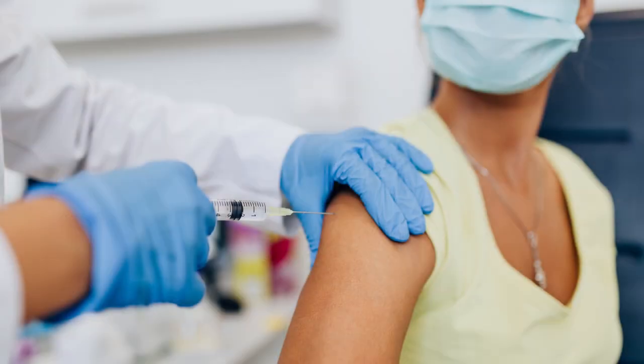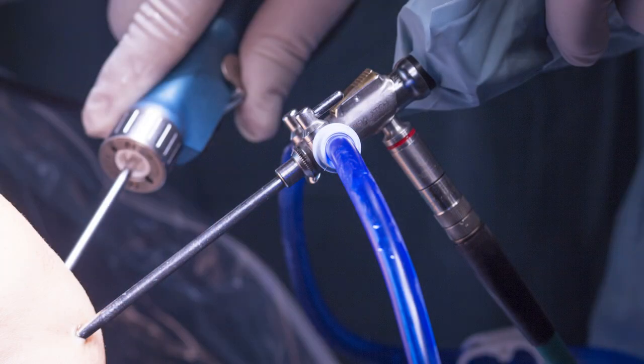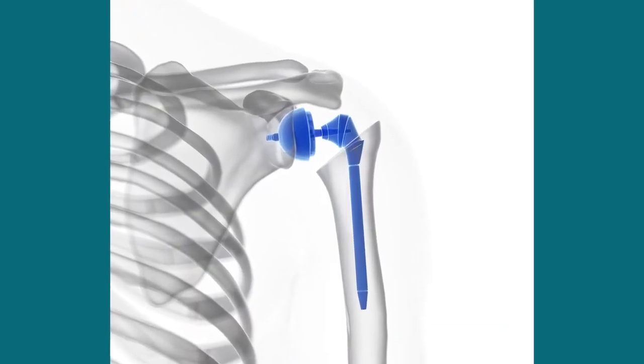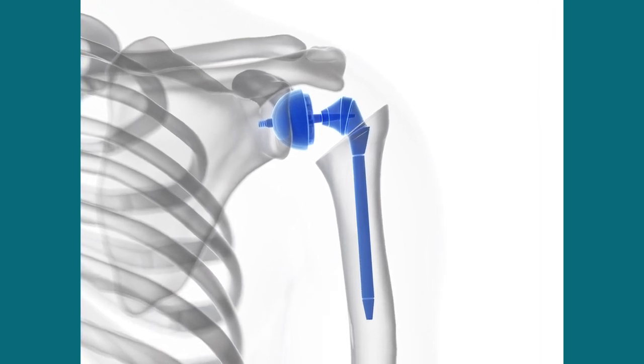Arthritis is more common as we get older, similar to knee and hip arthritis which is more commonly talked about. Shoulder arthritis can be treated with injections, therapy, arthroscopic surgery, as well as replacement type surgery. A shoulder replacement is similar to a knee and hip replacement. Essentially an incision is made in the front of the shoulder, we remove the bad cartilage and bone and replace it with metal and plastic, which relieves the pain from the arthritis.